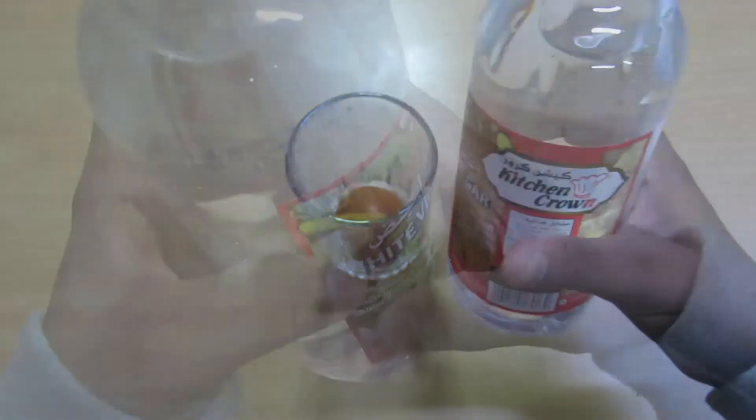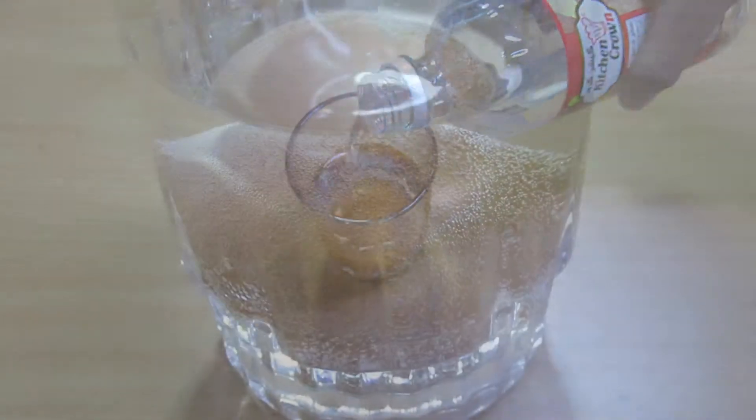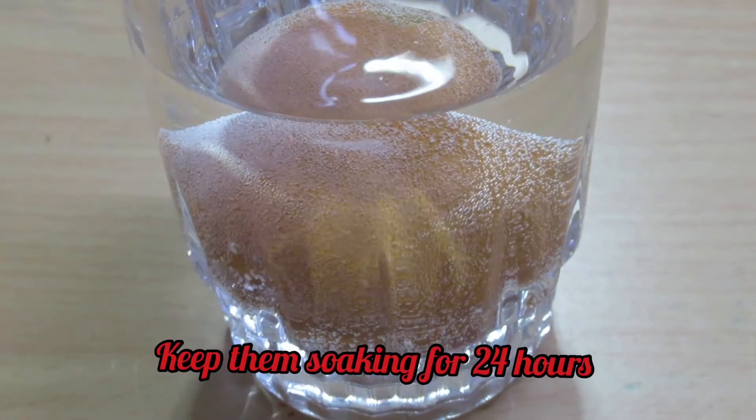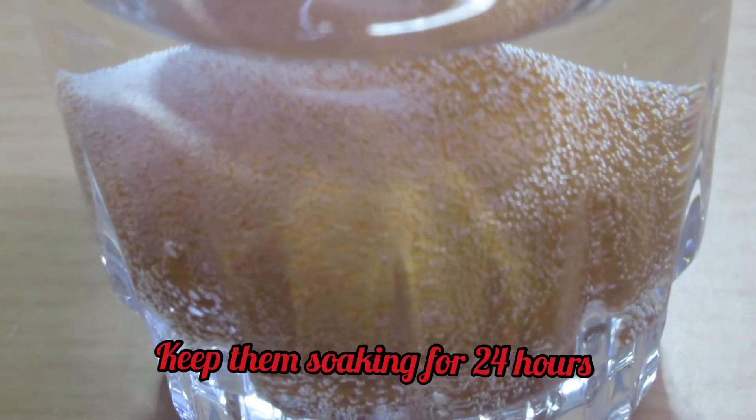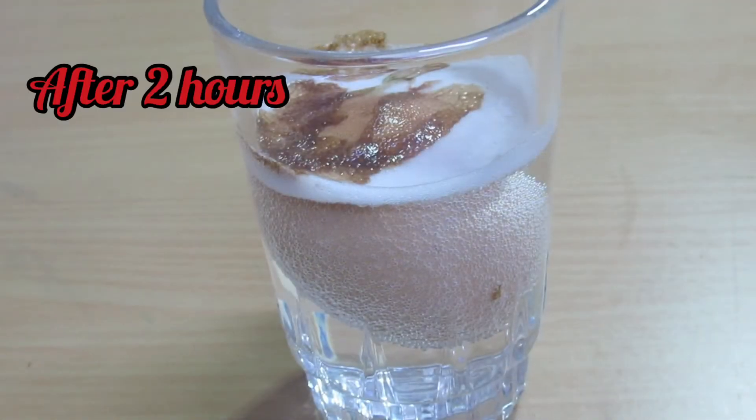Take an egg and put it in a glass. Then take some white vinegar and pour it into the glass to cover the egg. You can see that small bubbles start to form around the entire egg. The chemical reaction produces these carbon dioxide bubbles.